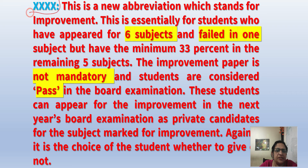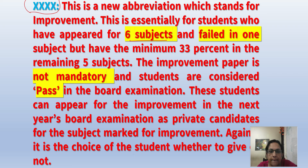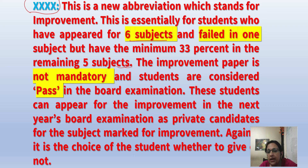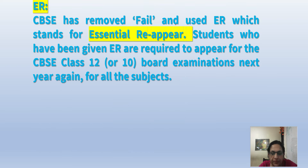The term 4x is for Improvement. Imagine you have 6 subjects and you fail in one, but you have minimum 33% marks in the other 5 subjects — so overall you are passed. Or maybe your marks are good but you want to improve them, so you apply for improvement. For those students who have applied for improvement, the result will show 4x.